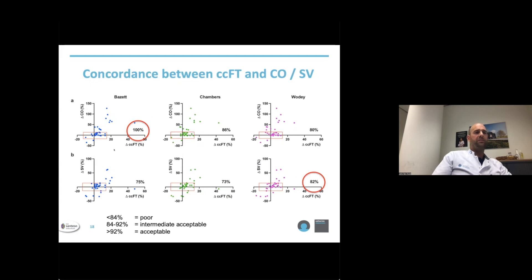This was shown in the next figure. What you can see here is the delta CCFT from T1 to T3 plotted against the delta cardiac output. If CCFT and cardiac output either increase or decrease in the same direction, then data points are in the upper right or lower left quadrant. The percentage of data points in these two quadrants determines the level of concordance.